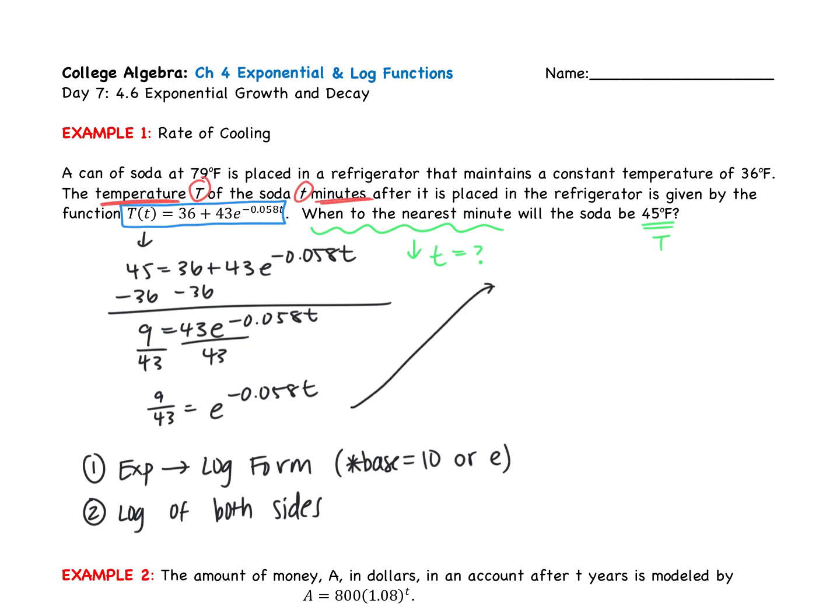We get log base e of 9 over 43 is equal to negative 0.058t. Log base e, though, is just natural log. So I'm going to replace that with a natural log. So then if I'm solving for t to get t alone, I'm going to divide by negative 0.058. So our t is going to be the natural log of 9 over 43 all over negative 0.058.